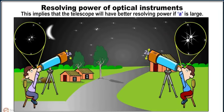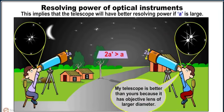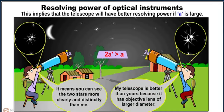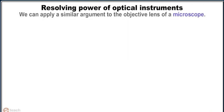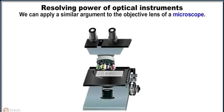Let us see the animation. If the objective lens is of the diameter 2a, then the telescope is better than the objective lens of the diameter a, because the two stars can be seen clearly and more distinctly in the case when the diameter is 2a. We can apply a similar argument to the objective lens of a microscope.